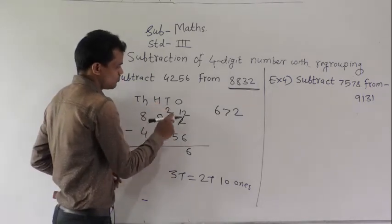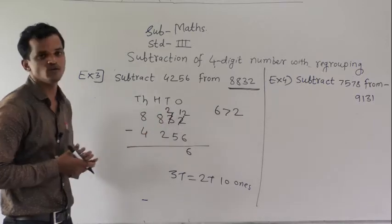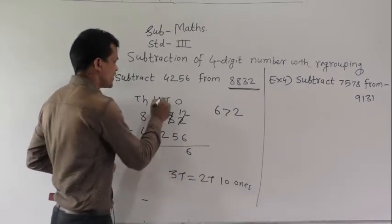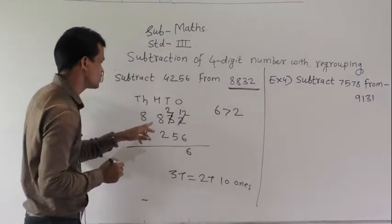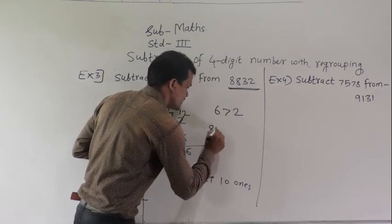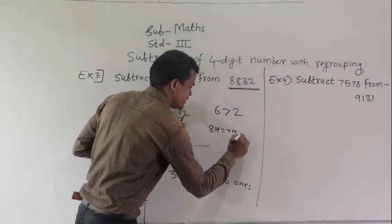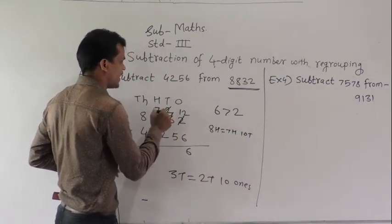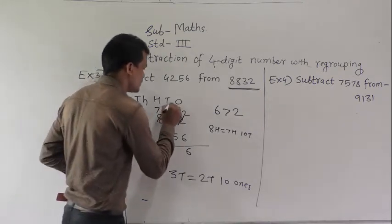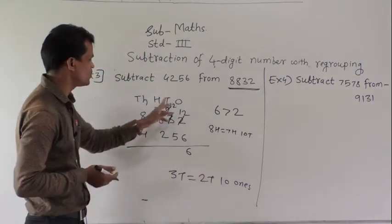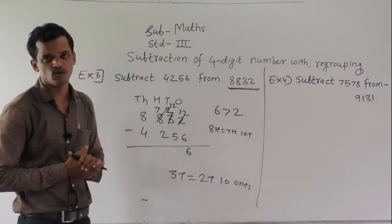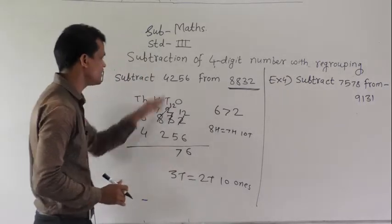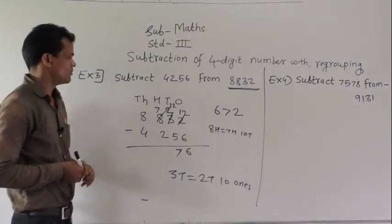Then 2 minus 5 — here also 2 minus 5 is not possible because 5 is greater than 2. So regroup this 800. 800 is equal to 700 and 10 tens. Write 7 here and add 10 tens into 2, so we get 12 tens. Now 12 minus 5 is possible: 12 minus 5 equals 7. Write 7 in the tens place column.